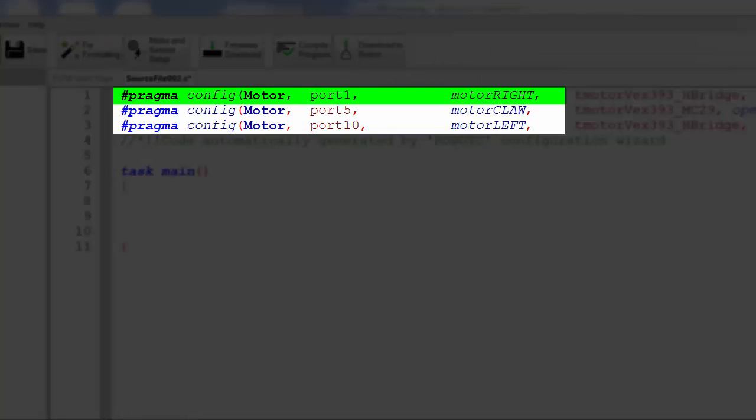Motor left and motor right are each going to be mapped to one of the joysticks, while motor claw is going to be mapped to buttons 6 up and 6 down.